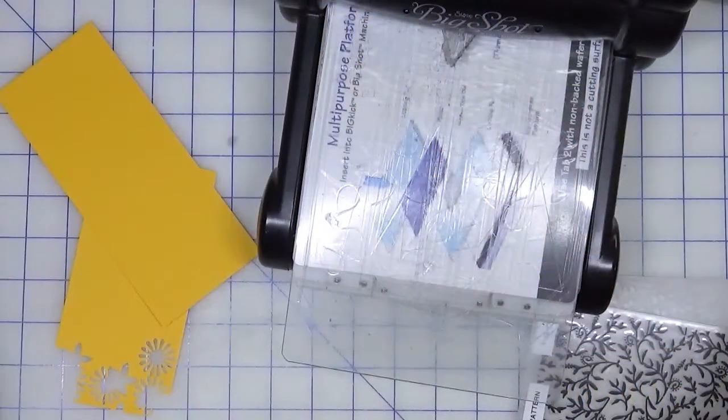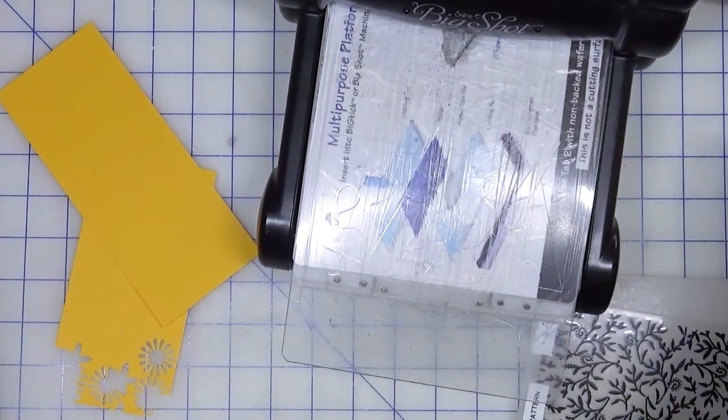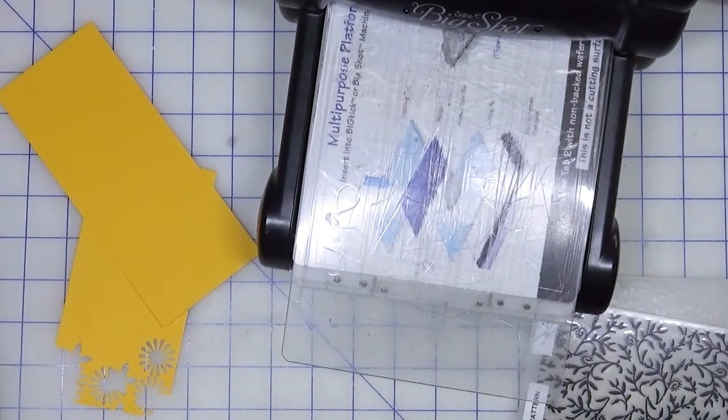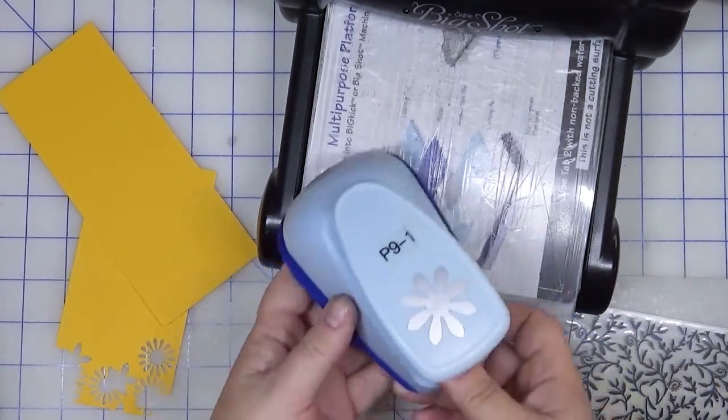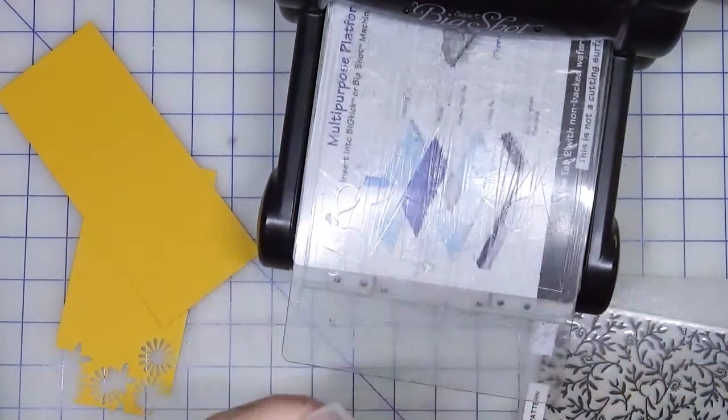Okay, we're going back to the yellow cardstock scraps and we're going to create something very similar to what we just created, only we're going to use the larger flower this time.